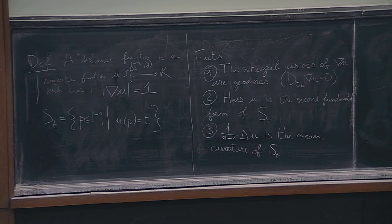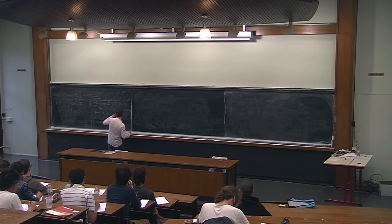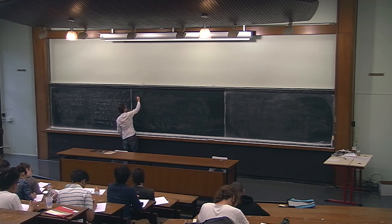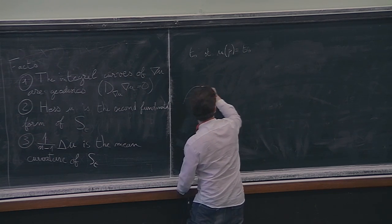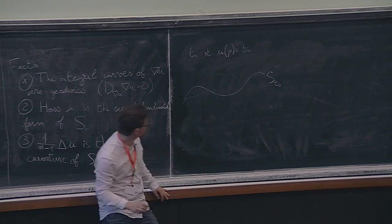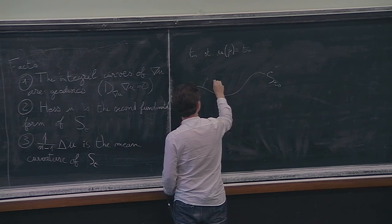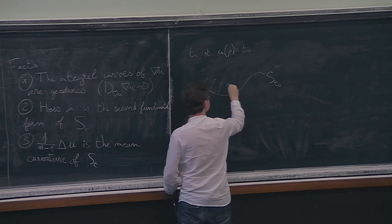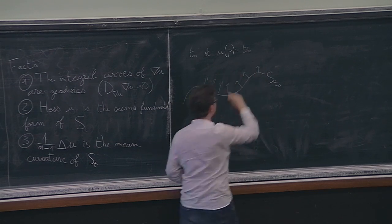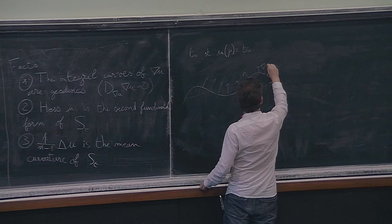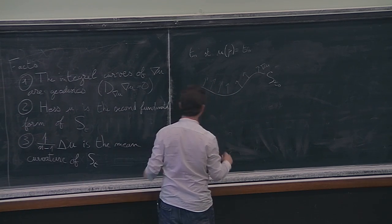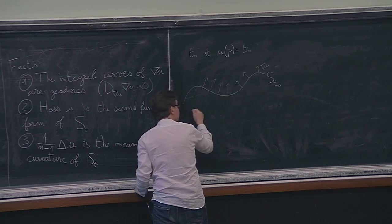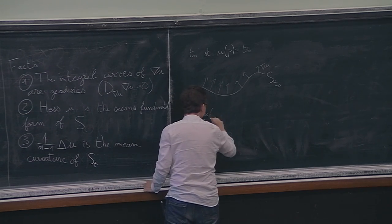Just like the distance function to a point where, in exponential coordinates, we have a nice expression for the metric, here you can do something similar. Pick T₀ such that U(p) = T₀. Then you have your hypersurface S_{T₀}, and the gradient of U points outward. You can build a coordinate system on a neighborhood of S_{T₀}.